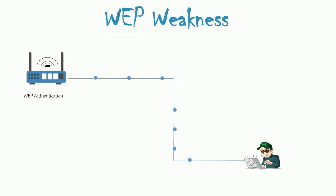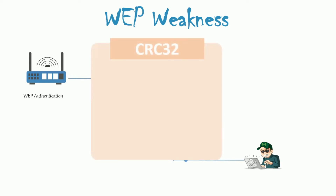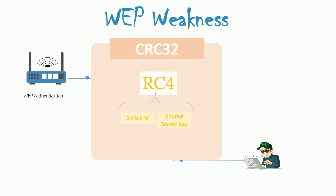WEP Weakness: WEP has significant design flaws and vulnerabilities. The integrity of the packets is checked using Cyclic Redundancy Check (CRC32). The CRC32 integrity check can be compromised by capturing at least two packets. The bits in the encrypted stream and the checksum can be modified by attackers so that the packet is accepted by the authentication system, leading to unauthorized access to the network.